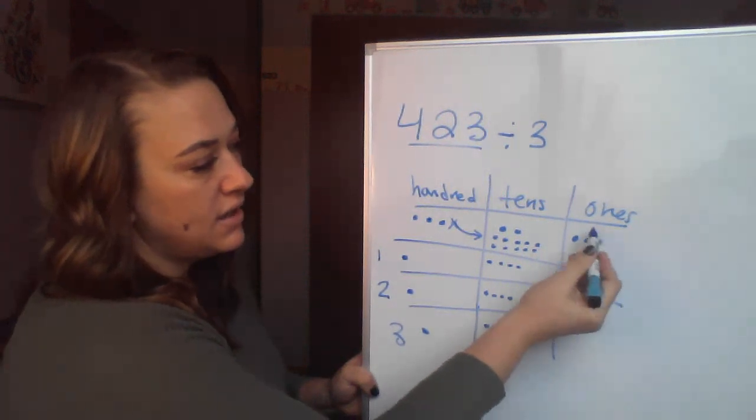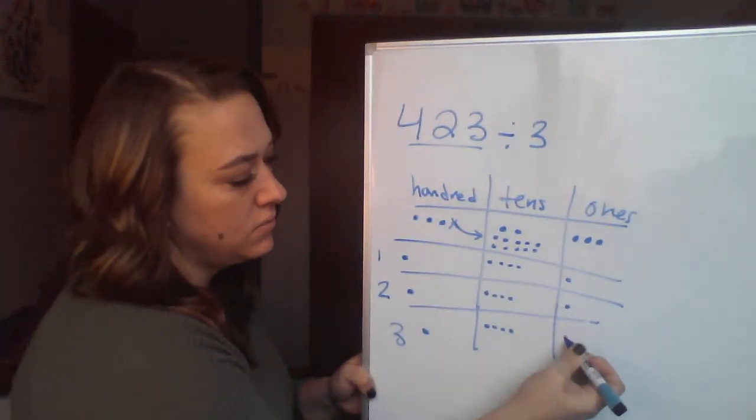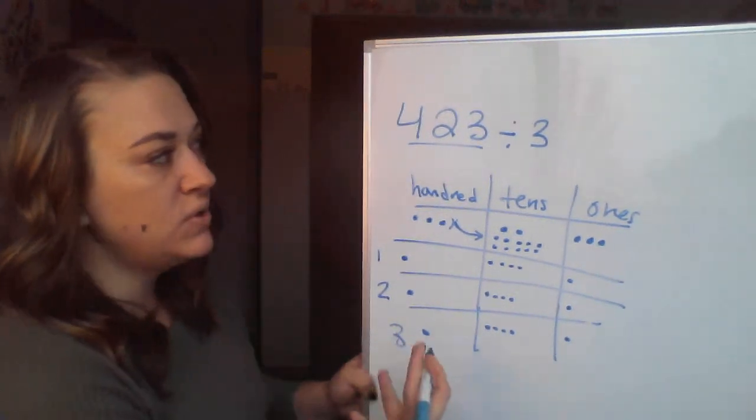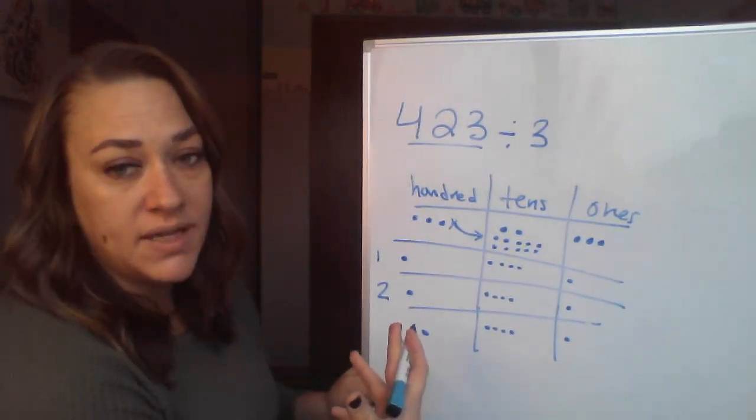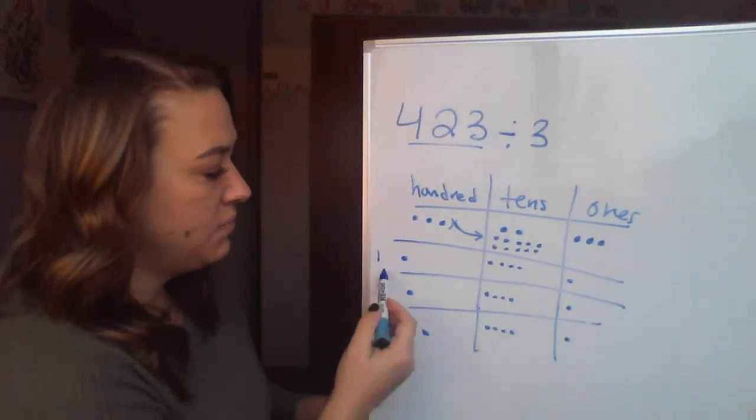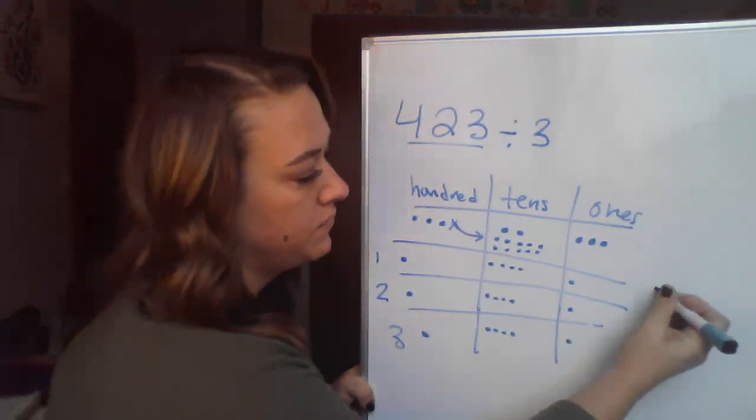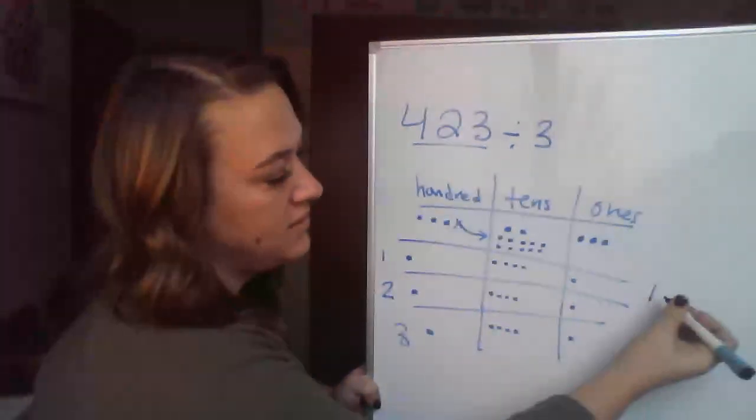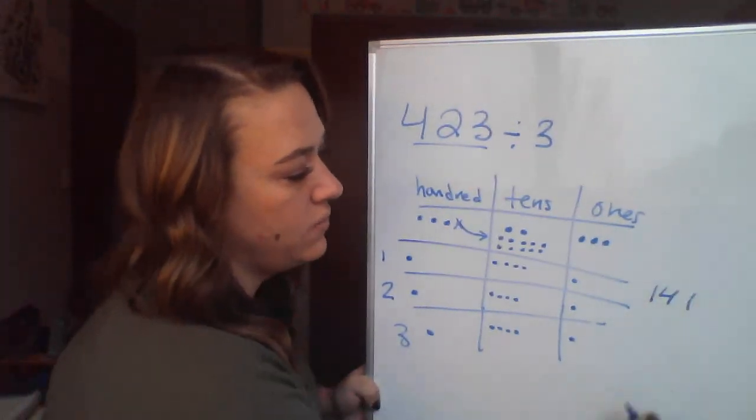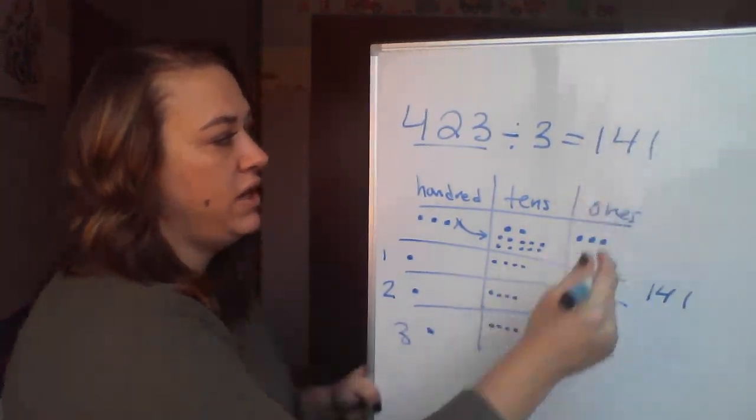Now I have my ones, and easily enough, I have three of them. So my quotient, my answer to this problem, is how many is in one of those groups. So in my one group, I have 100, I've got four tens and one 1. So my quotient is 141.